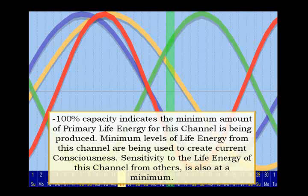Negative 100% capacity indicates the minimum amount of primary life energy for this channel is being produced. Minimum levels of life energy from this channel are being used to create current consciousness. Sensitivity to the life energy of this channel from others is also at a minimum.